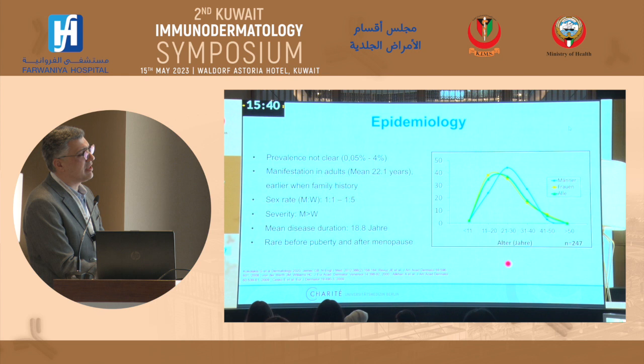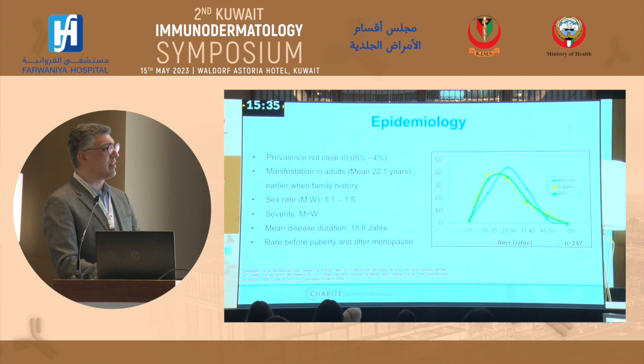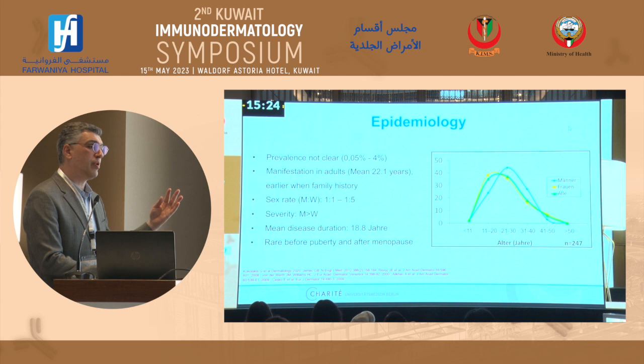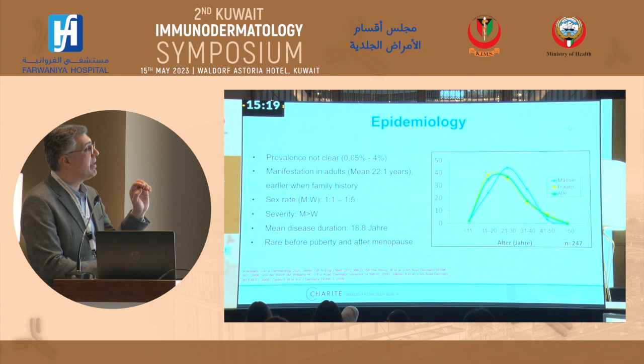This disease starts at puberty and activity goes down at menopause. We do have strong hormonal components in this disease. From old studies, they used to say it was a disease of women, but this is not the case — in new studies we have a male-to-female ratio of 1:1, or maybe 1:2, but not 1:5.